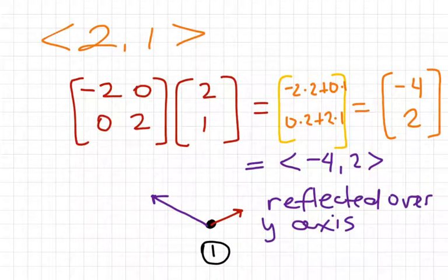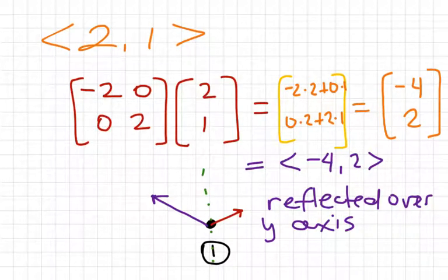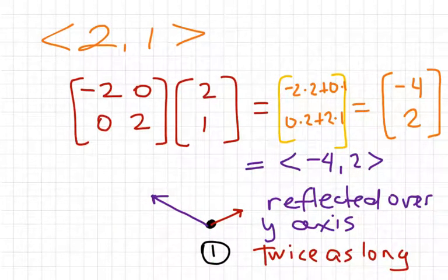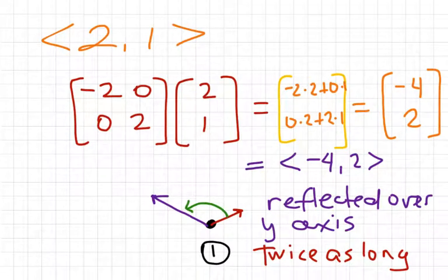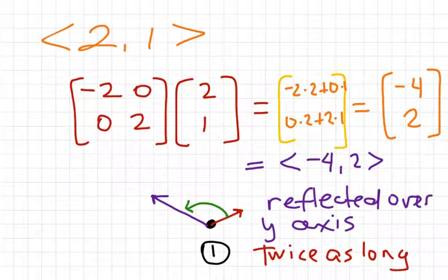Now describe what just happened. We would say it was reflected over the y-axis. Also, it was extended — you might notice it's twice as long. Instead of going over 2 and up 1, you go over 4 and up 2, so everything is twice as much. We could also call this a rotation counterclockwise, but since we're not covering degrees and angles at this point, we'll just say it's reflected over the y-axis and twice as long.